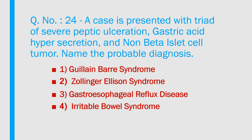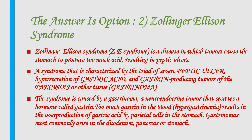Question number 24: A case is presented with the triad of severe peptic ulceration, gastric acid hypersecretion, and non-beta islet cell tumor. Name the probable diagnosis: 1) Guillain-Barré syndrome, 2) Zollinger-Ellison syndrome, 3) Gastroesophageal reflux disease, 4) Irritable bowel syndrome. Answer is option 2 — Zollinger-Ellison syndrome. It is a disease in which tumors cause the stomach to produce too much acid, resulting in peptic ulcer.